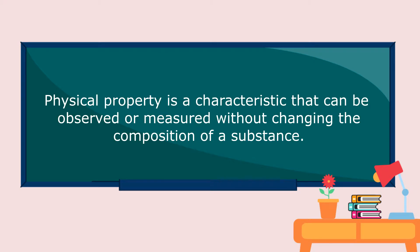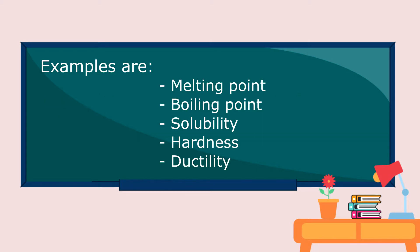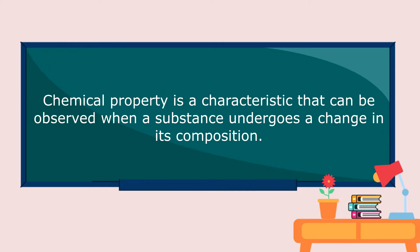Matter has two main properties: physical and chemical properties. Physical property is a characteristic that can be observed or measured without changing the composition of a substance. Examples are melting point, boiling point, solubility, hardness, and ductility. Chemical property is a characteristic that can be observed when a substance undergoes a change in its composition.